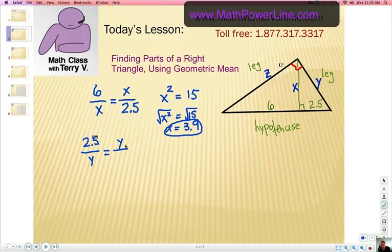It's the geometric mean between the near part and the entire hypotenuse. Okay? So that's a theorem that we need to know in our geometry studies. Let me say it one more time. The leg of the original right triangle is the geometric mean between the near part, or the adjacent part, of the hypotenuse and the entire hypotenuse.